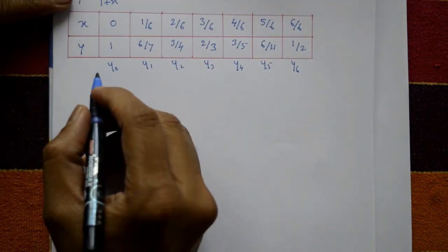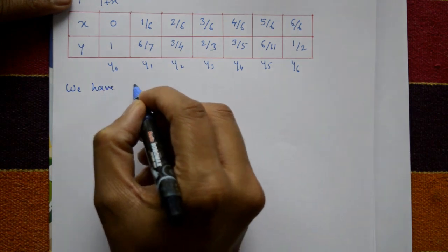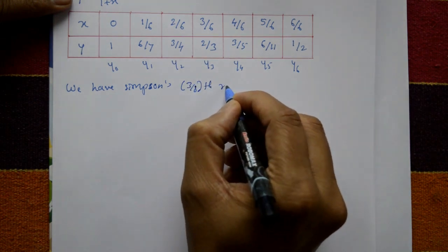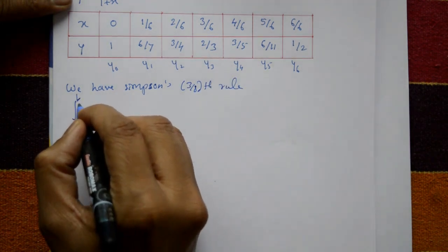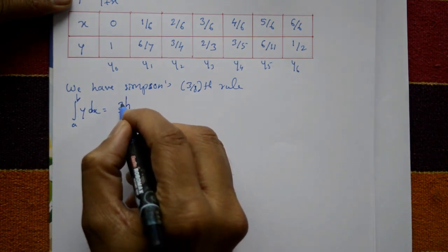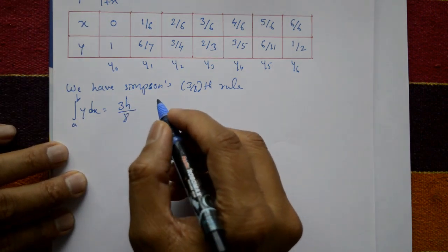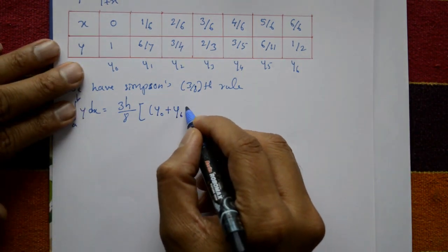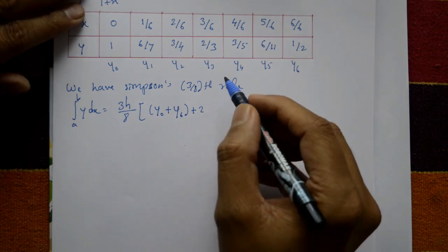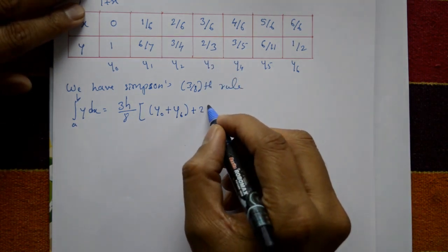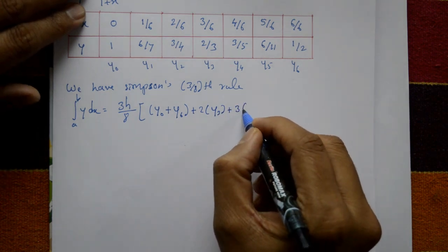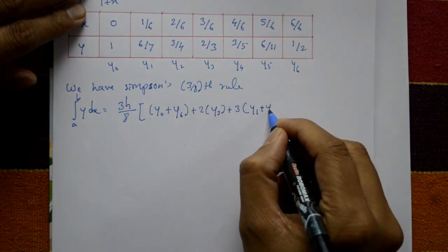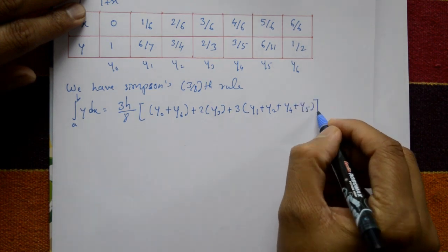Now we apply Simpson's 3/8 rule. The formula is: the integral from a to b of y dx = (3h/8) × [(y₀ + y₆) + 3(y₁ + y₂ + y₄ + y₅) + 2(y₃)].